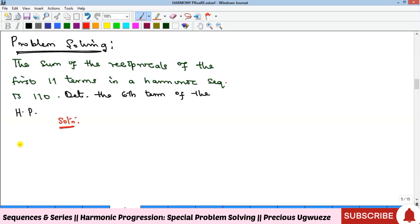Remember, we said that if you take the reciprocals of the terms of a harmonic sequence, you will get an arithmetic sequence. So the implication is that the reciprocals of the 11 terms taken are actually terms of the corresponding arithmetic sequence. This means that the sum is actually Sₙ.